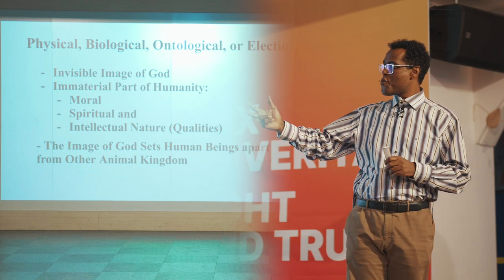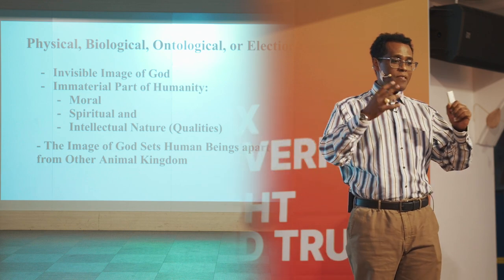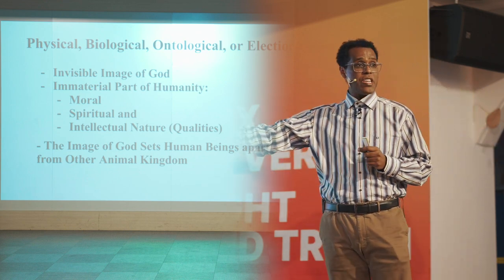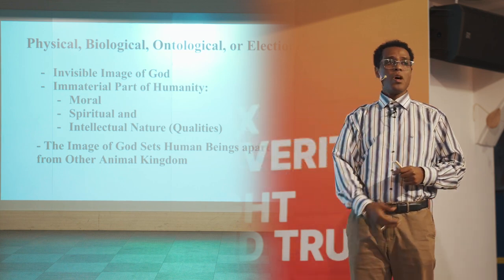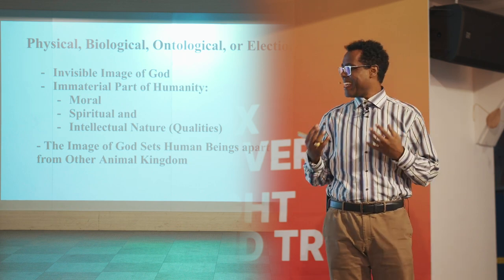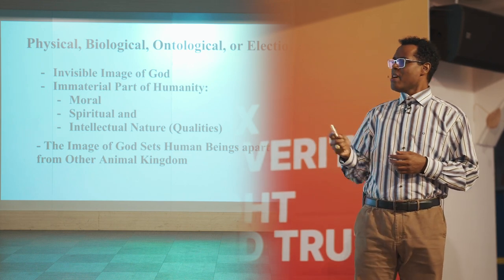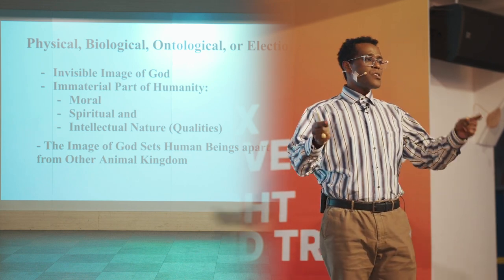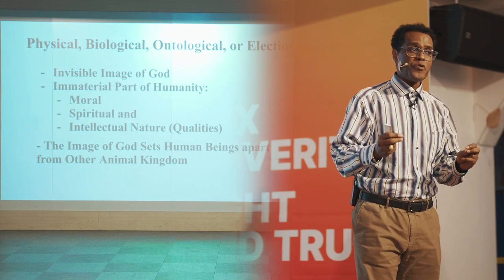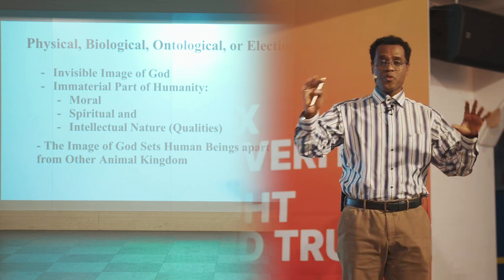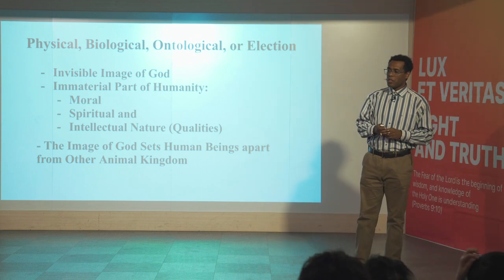I brought three things here, though this is not an exhaustive list. Number one: morality. Number two: spirituality. And the third one: intellectual nature, or the quality of being intelligent. The image of God sets human beings apart from the animal kingdom. What makes us different, mainly from the animal kingdom or other creatures, is that we are the image bearers of God.